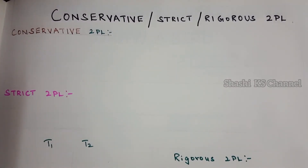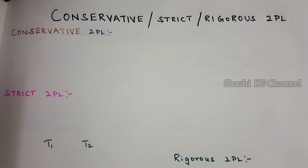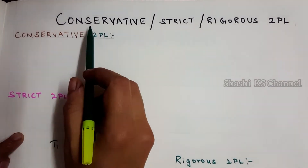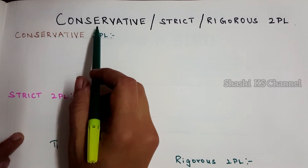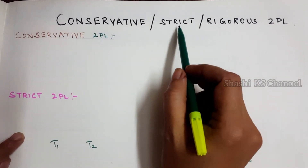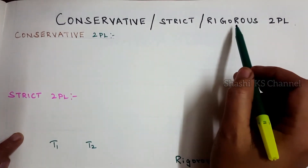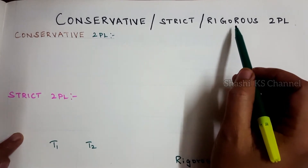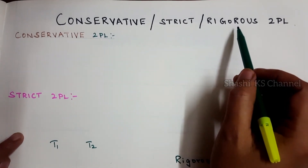Hello everyone, welcome to the channel. In the last video, we saw about the two-phase locking protocol and this is a continuation of that video where we are going to see about the different types of variations of the two-phase locking protocol. There are three different variations: conservative two-phase locking, strict two-phase locking, and rigorous two-phase locking protocol. Let us see about each of them.